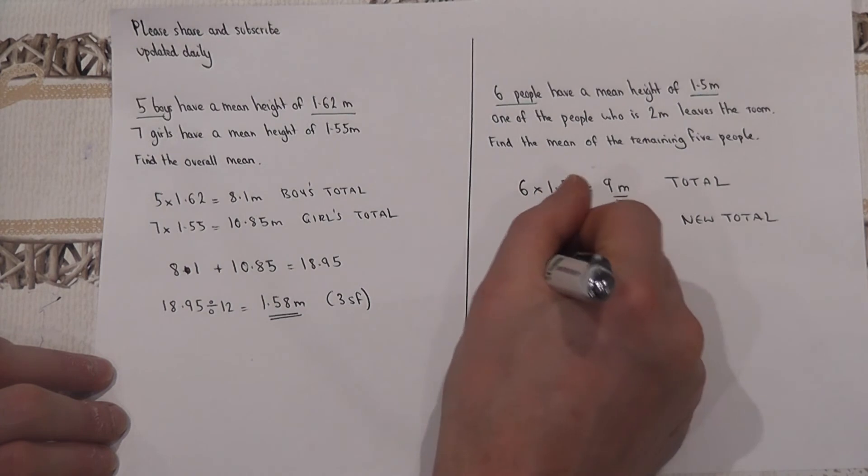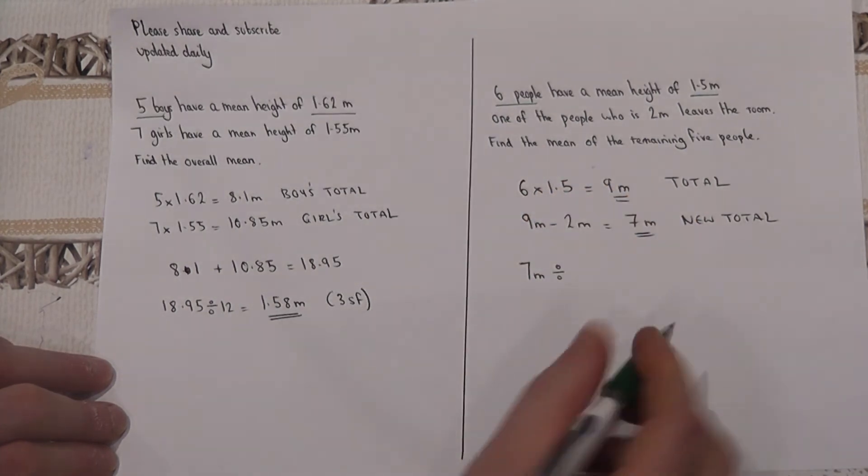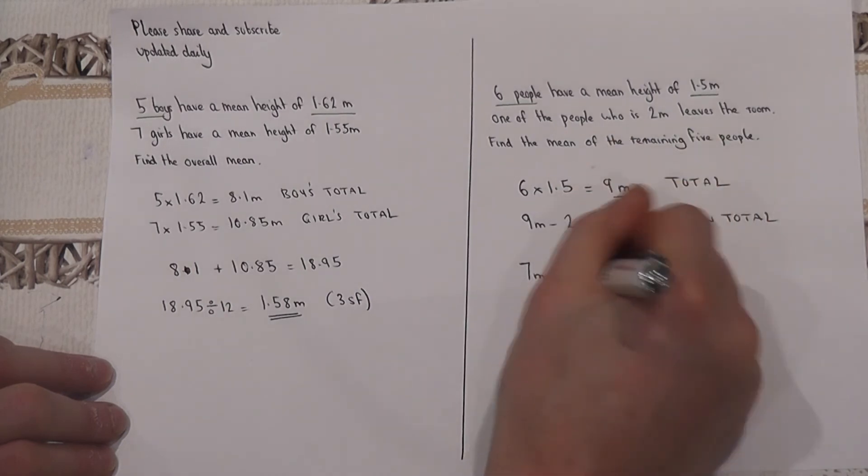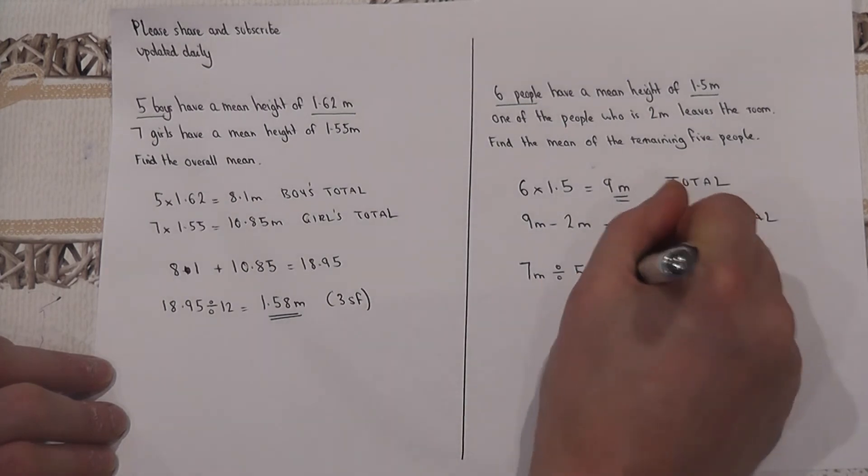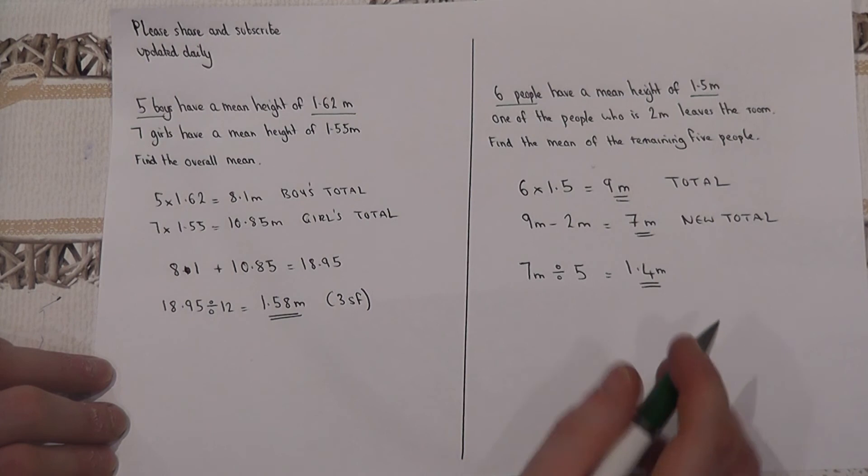So to find the new mean, if the total is seven meters, we take the total divided by five because there are five people. And seven divided by five we know is 1.4 meters. So the new mean of the five people is 1.4 meters precisely.